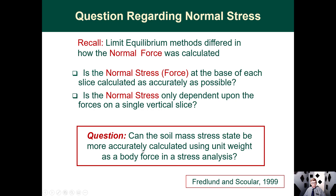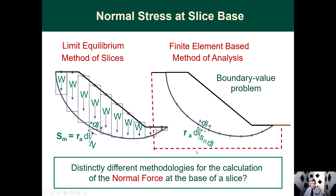I ended last lecture with a question: is the normal force at the base of the slice calculated as accurately as possible? The various limit equilibrium methods differed in how they calculated the normal force — that's what caused the differences between the methods. Stated another way: is the normal stress only dependent upon the forces on a single vertical slice, as assumed in methods of slices? Or can the soil mass stress state be more accurately calculated using unit weight as a body force in a stress analysis? Kulhawe did a lot of work addressing this question.